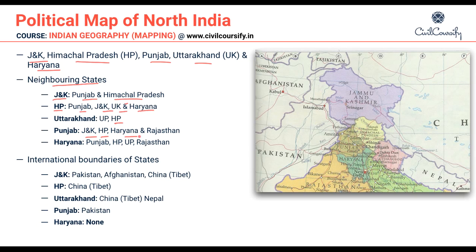Punjab has J&K, Himachal Pradesh, Haryana, and Rajasthan. Haryana has Punjab, Himachal Pradesh, UP, and Rajasthan. You should remember the neighboring states by a pictorial representation in your mind — the map should be totally ready in your brain whenever you go into the exam.